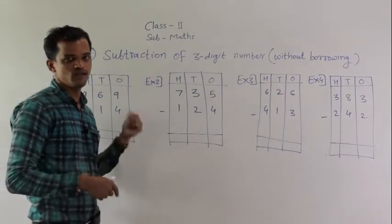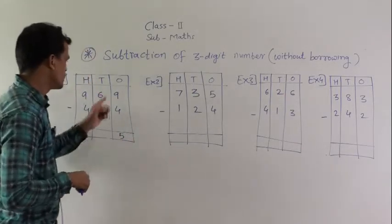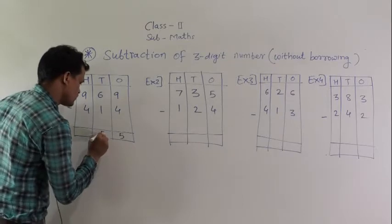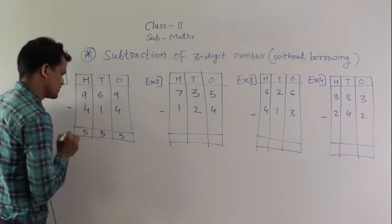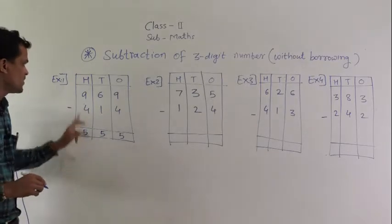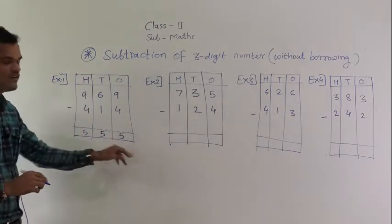Count backward so you will get the answer. 6 minus 1, 5. 9 minus 4, 5. Read this number: 555.